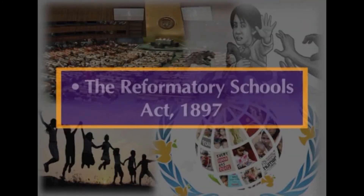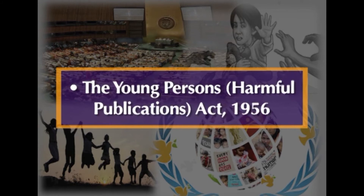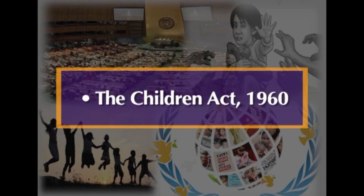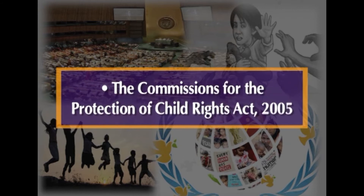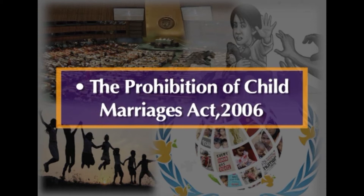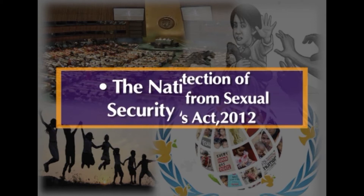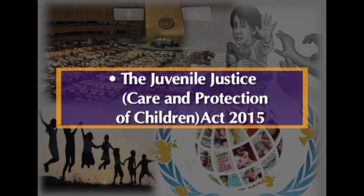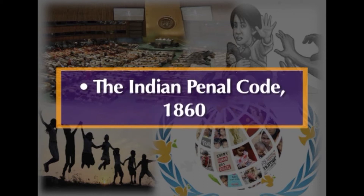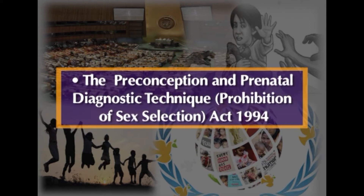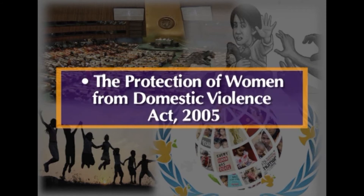As regards the legal regime relating to various aspects of human rights of children, there are numerous laws including: The Reformatory Schools Act; The Young Persons Harmful Publications Act; The Guardians and Wards Act; The Factories Act; The Probation of Offenders Act; The Children Act; The Child Labour Prohibition and Regulation Act; The Commissions for the Protection of Child Rights Act; The Prohibition of Child Marriages Act; The Rights of Children to Free and Compulsory Education Act; The Protection of Children from Sexual Offences Act; The National Food Security Act; The Juvenile Justice, Care and Protection of Children Act 2015; The Indian Penal Code 1860; The Code of Criminal Procedure 1973; The Preconception and Prenatal Diagnostic Technique (Prohibition of Sex Selection) Act; and The Protection of Women from Domestic Violence Act. The above laws are only illustrative in nature, however they have a bearing on the human rights of children.